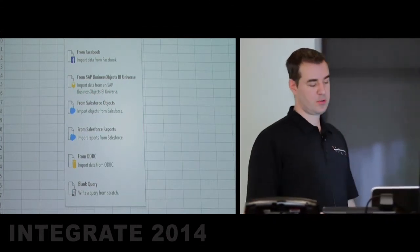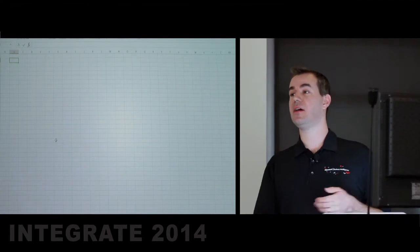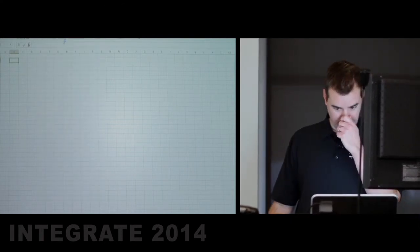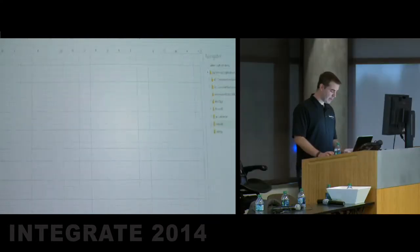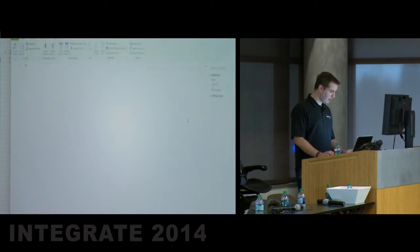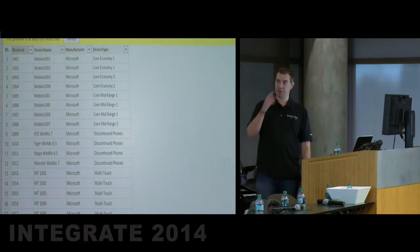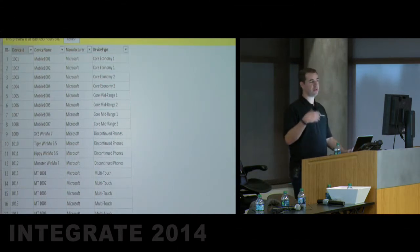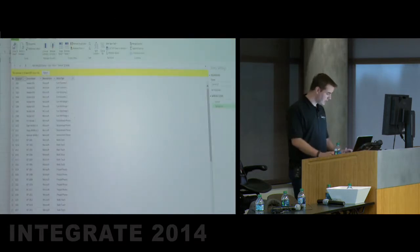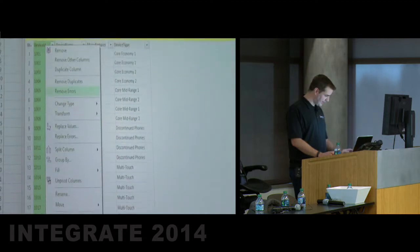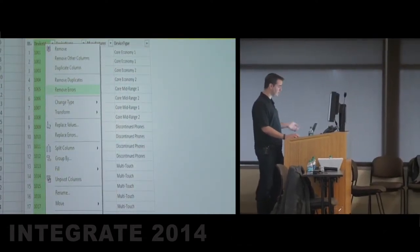I'm going to import some data directly from a SQL Azure database. I've connected to this one before, and now I see a list of tables in my Azure database. I can click on the database I want — MacMidi — and I want to import my devices table. I click Edit and it opens up my Power Query editor. I can start playing around with this data — I can add filters, add custom columns with formulas, do text filters, right-click to remove columns, change the type, transform it, replace values, split columns, and group.